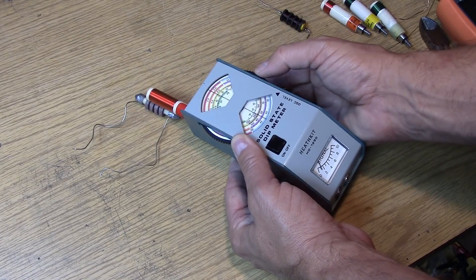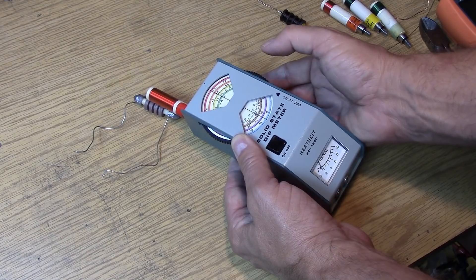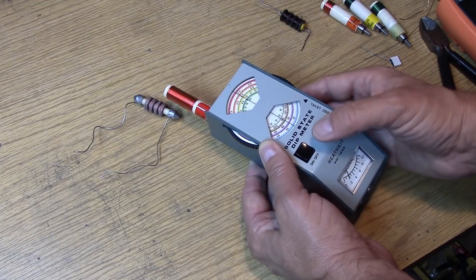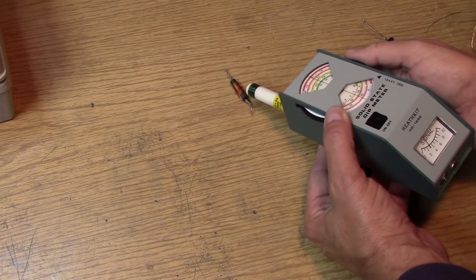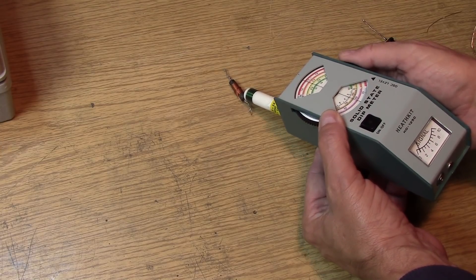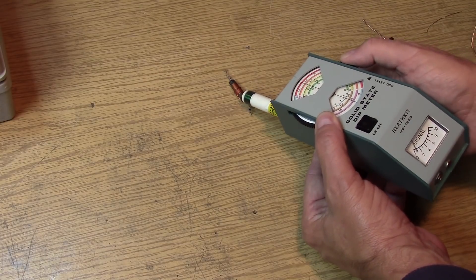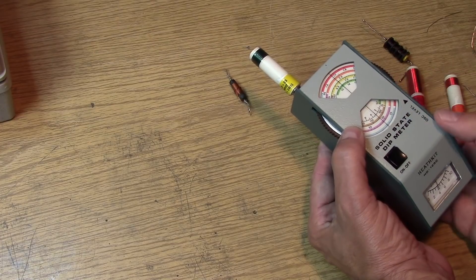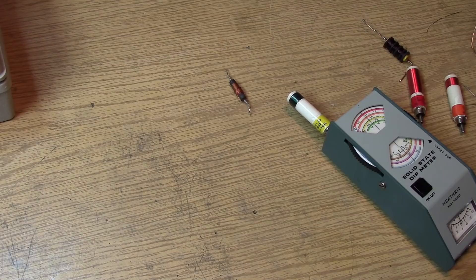There it is, right there. Looks like about 2.4. That's not surprising. So, let's look for the resonance on the little 100 microhenry choke. And it looks like we have the parallel resonance coming in about 6.6 or 6.7 megahertz on that choke.